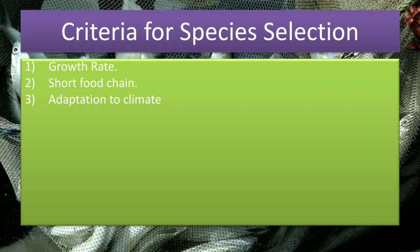The third criteria is adaptation to climate. Species which can adapt to our climate and tolerate changes or fluctuations in the environment should be selected for aquaculture.